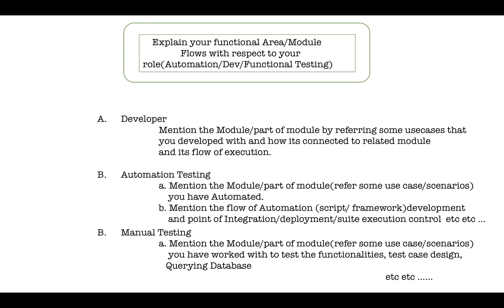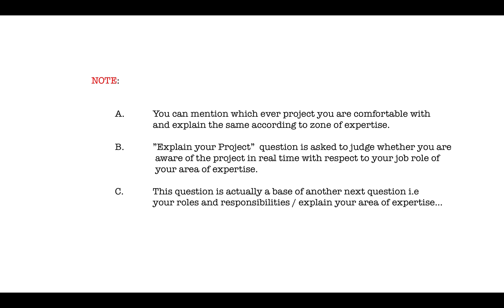If you are an automation person, mention the flow of your automation script writing relevant to your project — not just an explanation of your framework. Also mention how the modules integrate, how you trigger the suites, and if you use a continuous integration tool like Jenkins, mention that too. If you are a manual tester, mention what modules you handled, the test cases and scenarios you wrote, any database testing you did, the SQL queries, and the schemas you worked with.